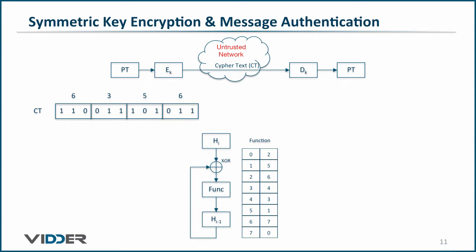Here is the function we will use. For any input on the left, we'll get the output on the right. So let's create a table of the values of the hash function. We start with the first block, which is 6 — the first value of our ciphertext — and the first value into our XOR logic. Normally the hash function would have a previous value, but we will assume it is 0. Therefore, 6 XOR 0 is 6, our first computed value. Throwing 6 into our function, we get 7, the value of this round of the hash function.